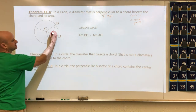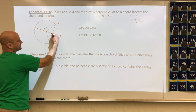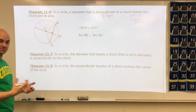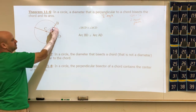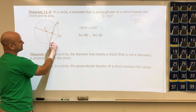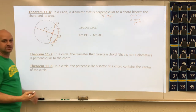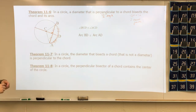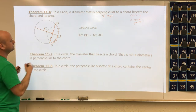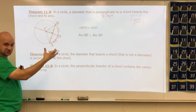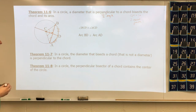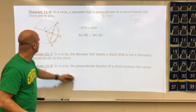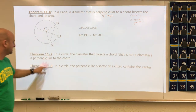The diameter and chord are at 90 degrees — perpendicular — so the diameter bisects the chord: this part is congruent to that part. And its arcs: this arc is congruent to that arc. As a result, central angle BCD is congruent to central angle ACD, which relates back to congruent chords and arcs leading to congruent central angles.